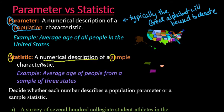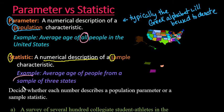I do have examples under each of them. The example I gave for a population parameter is the average age of all people in the United States. And the example of a statistic would be the average age of people from a sample of three states.